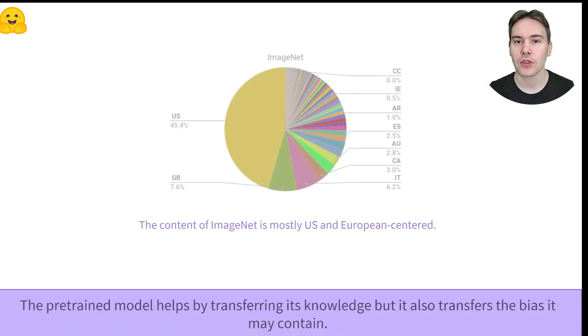But with the good comes the bad. The pre-trained model does not only transfer its knowledge, but also any bias it may contain. ImageNet mostly contains images coming from the United States and Western Europe. The models fine-tuned with it will perform better on images from these countries.